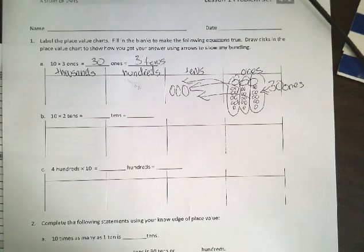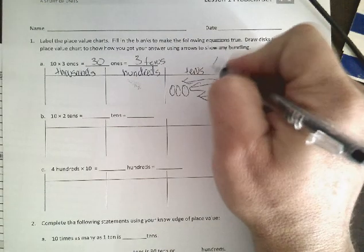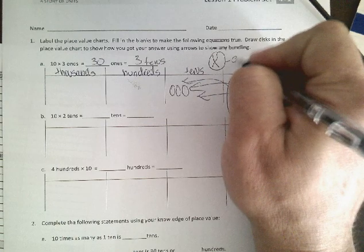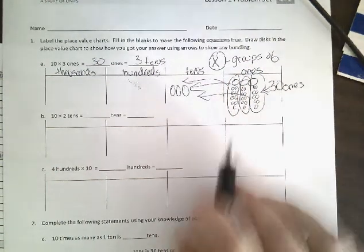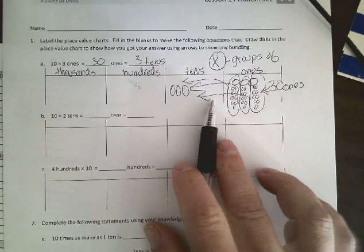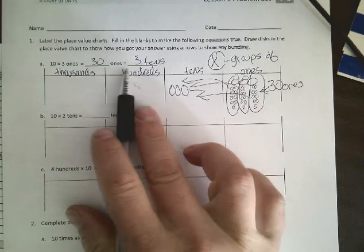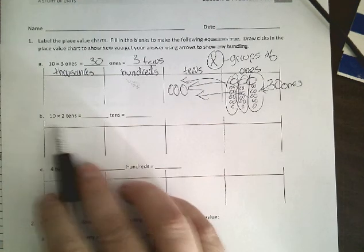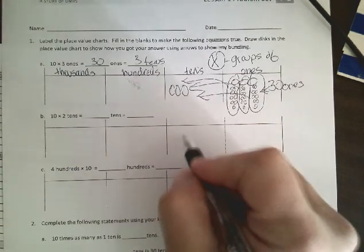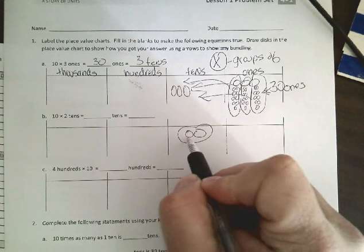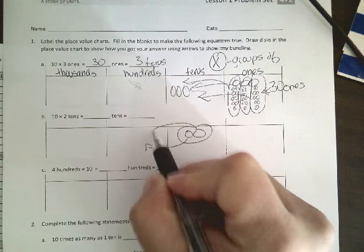What I was telling some of the classes here also is when you see a multiplying sign that means groups of. So when we have 3 groups of 10, we have 3 tens. 10 times 2 tens, if we have 2 tens and we're going to multiply that by 10, we can take these two groups of 10, move them over here.